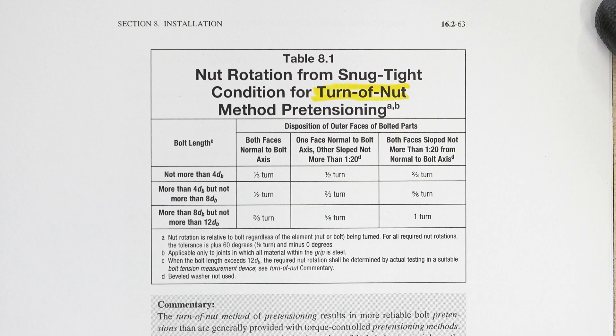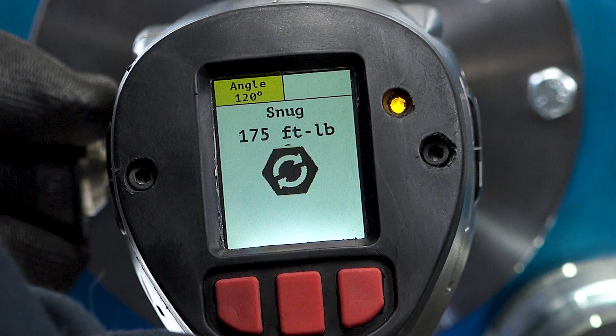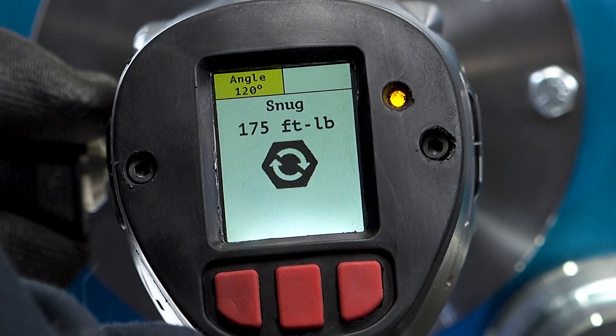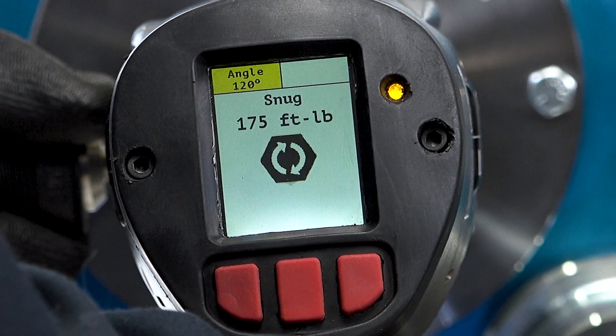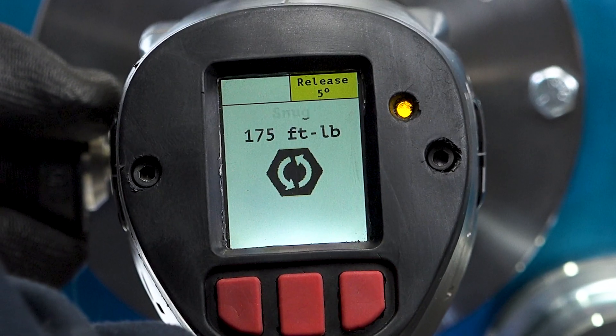Once again, tightening progresses from the most rigid part of the joint systematically to the free edges. The lithium series 2 tightening tool is set to the specified angle to complete the pre-tensioning operation, and a release angle is used to ease removal of the tool after tightening.